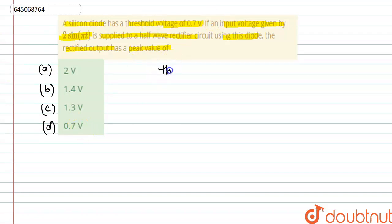So according to the question, it's given that threshold voltage of silicon is given as Vs, we can write this as 0.7 volt. And input voltage Vi is given as 2 sin pi t.